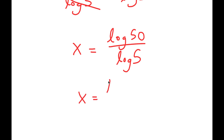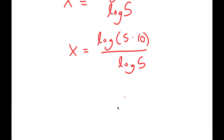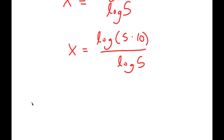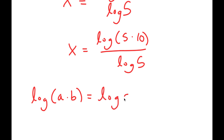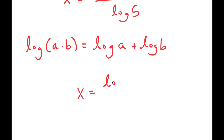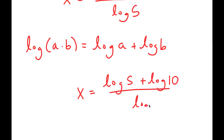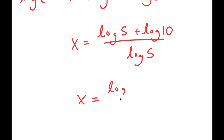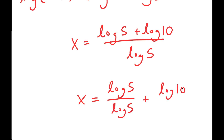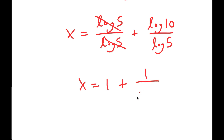From here, I'm going to write this as log of 5 times 10 over log of 5. Another property of logarithms is that log of a times b is equal to log a plus log b. So log of 5 times 10 is equal to log of 5 plus log 10, and I have this over log 5. So I get x is equal to log 5 over log 5 plus log 10 over log 5. These two cancel out, and I get x is equal to 1 plus 1 over log 5.